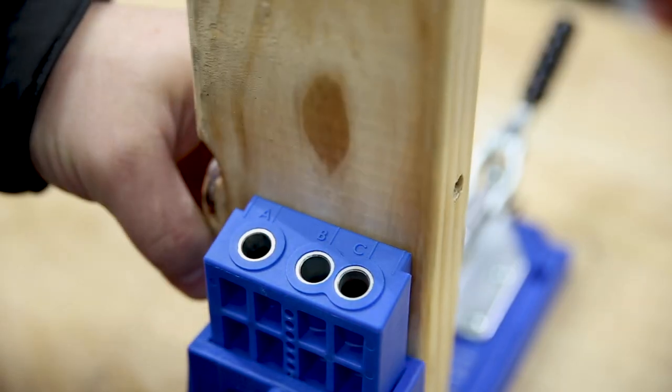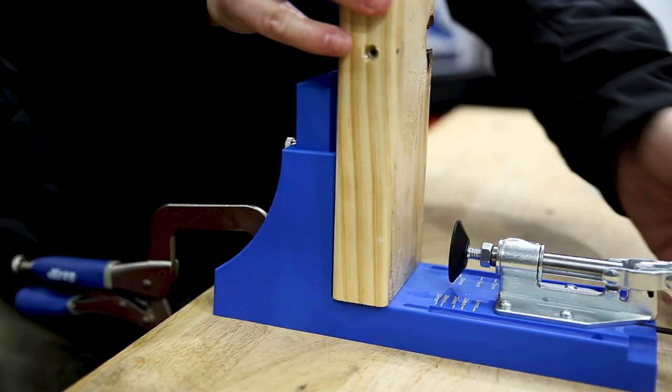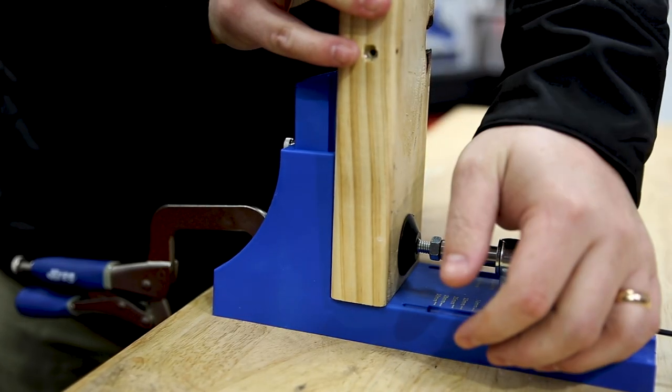I suggest you always use two screws for maximum strength. Once the timber is in position, you can squeeze that adjustable clamp and it's locked in place ready for drilling.